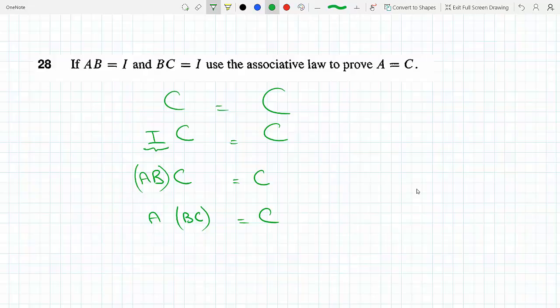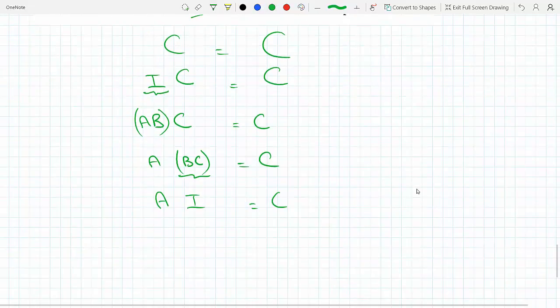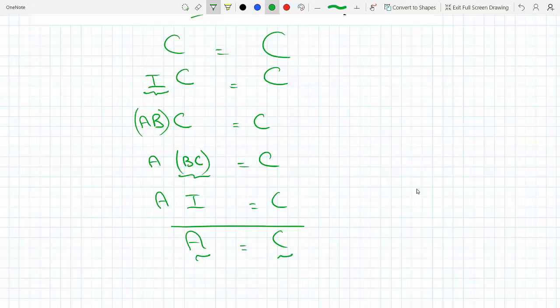However, BC equals the identity matrix, so I can replace this with I. Now I have A times I equals C, but A times the identity matrix is just A, so A equals C. That does it.